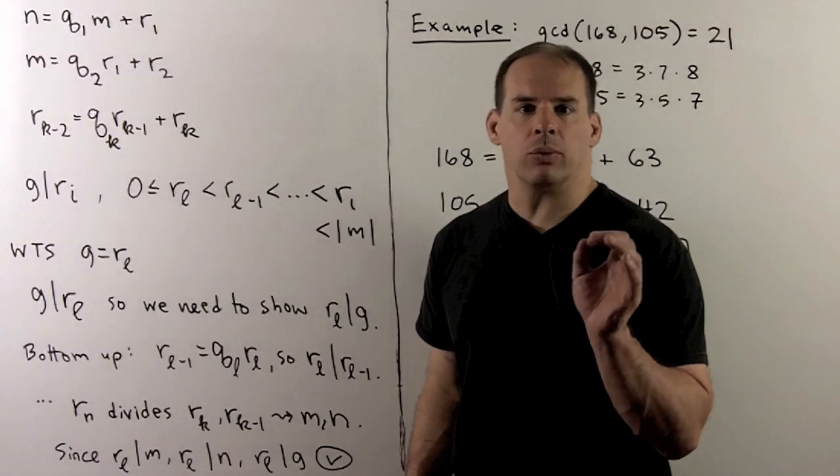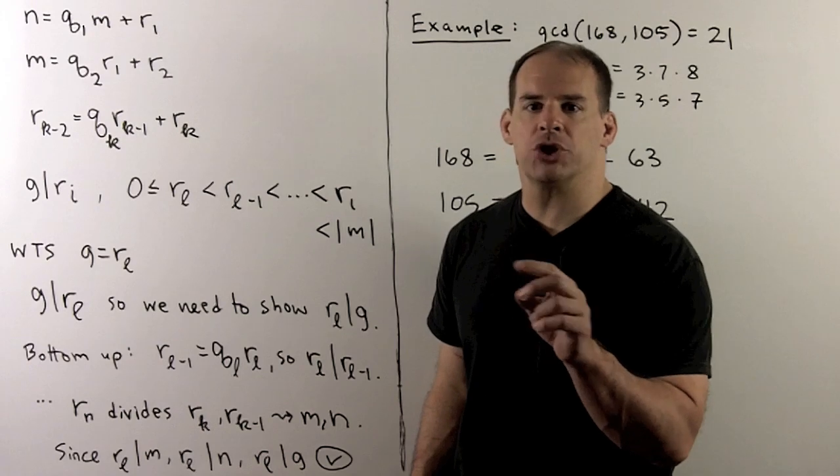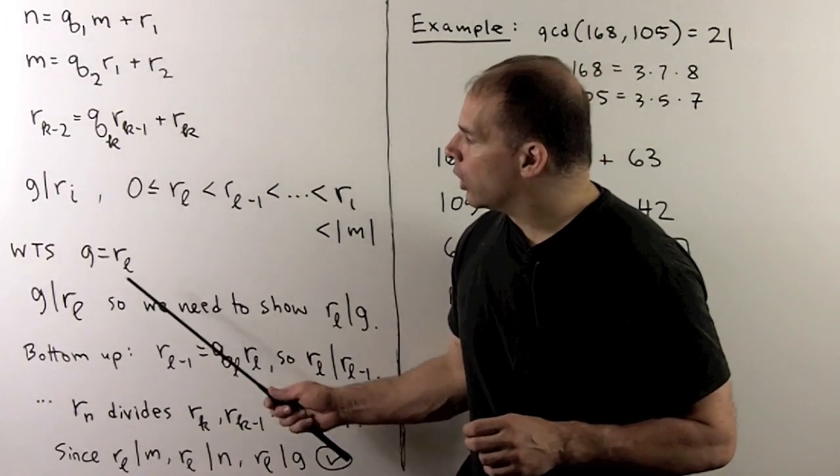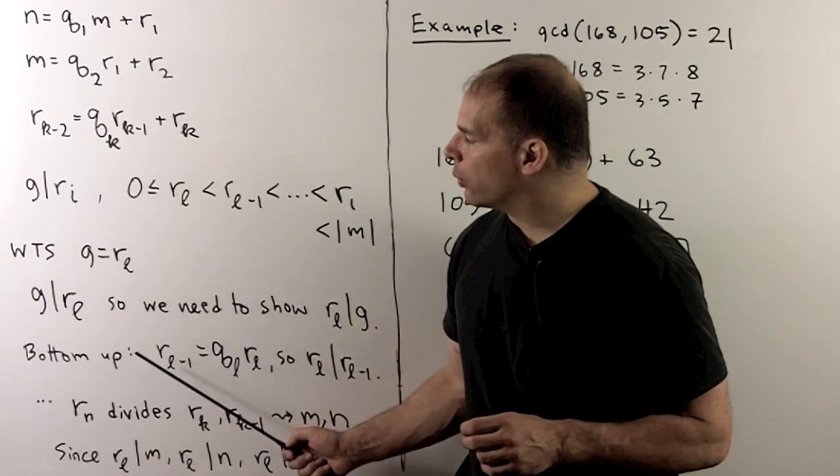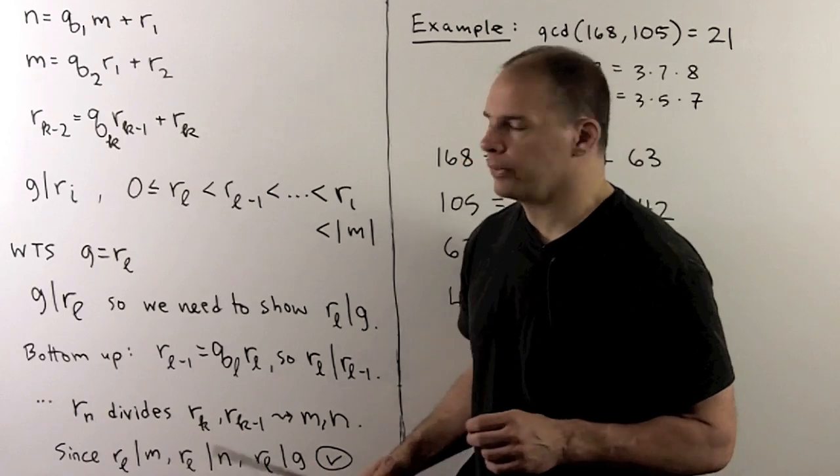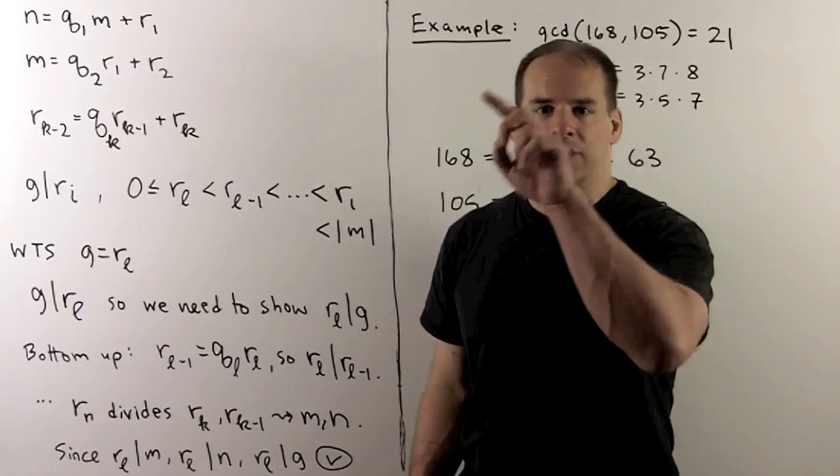Because the greatest common divisor and the remainders are non-negative integers, to show equality, it's enough to show mutual divisibility. Now, we already have that g divides each of the remainders, so we only have to show that the last remainder divides g. To do that, we work from the bottom up in our list of equations.